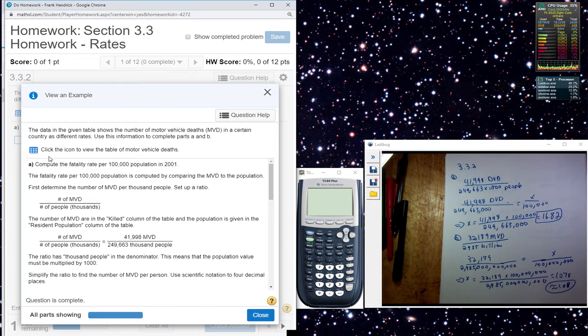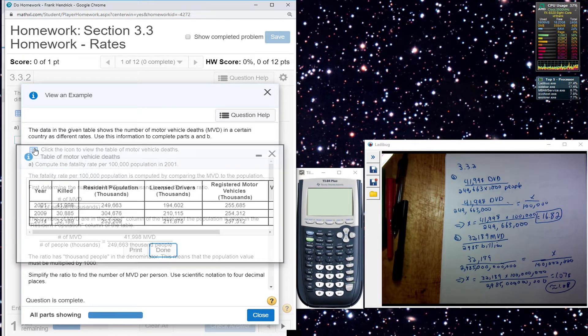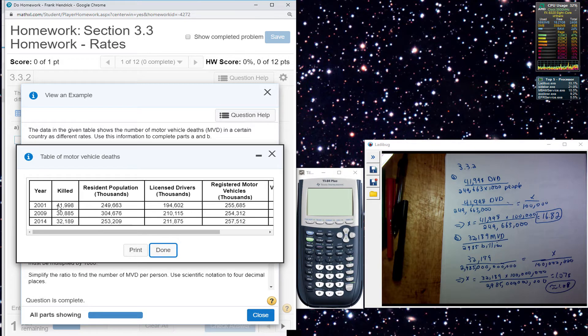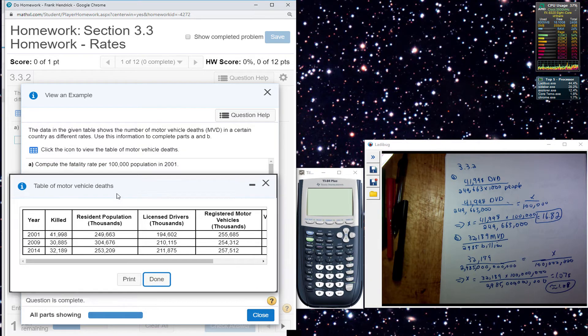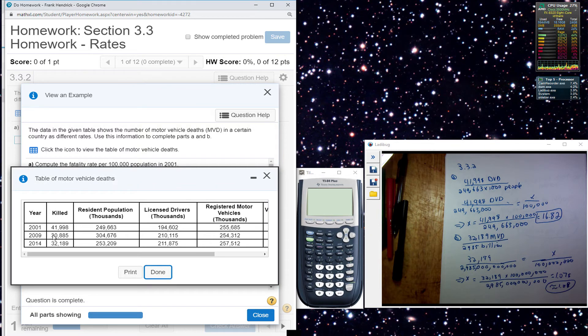This one here, I'm trying to find the fatality rate per 100,000 vehicle deaths. So I look at my table and find out how many people died in 2001. So 41,000 there.